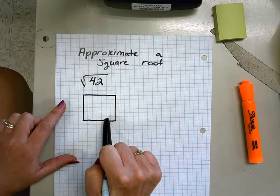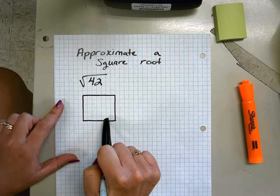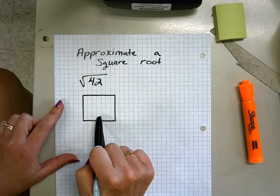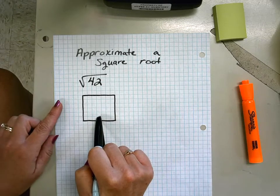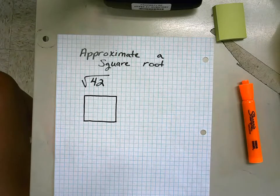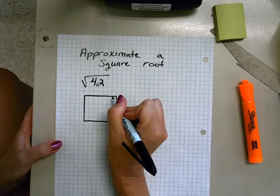What I'm going to be starting to think about is: what's the largest perfect square that I could fit into my 42? That answer would be 36. Six times six is 36.